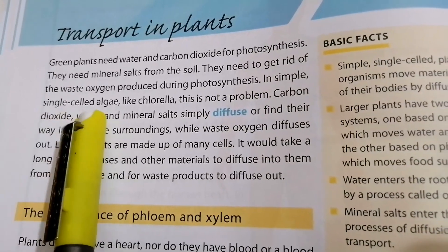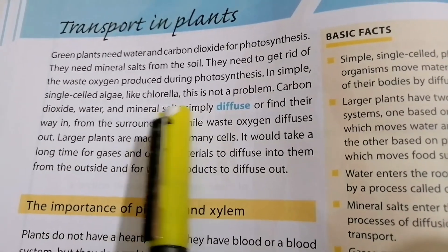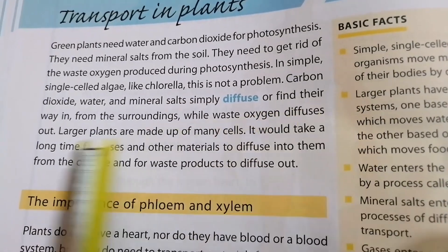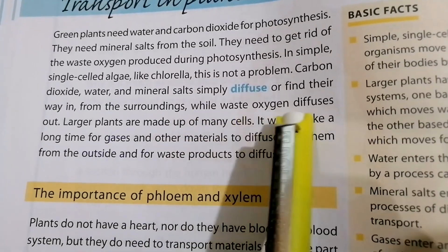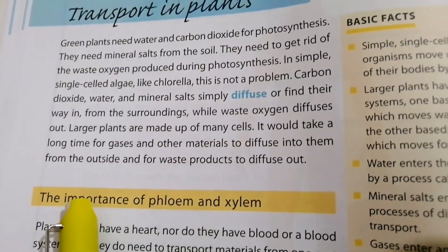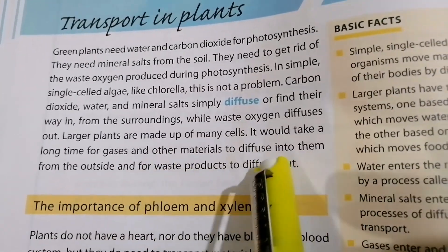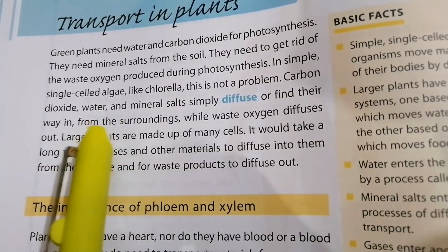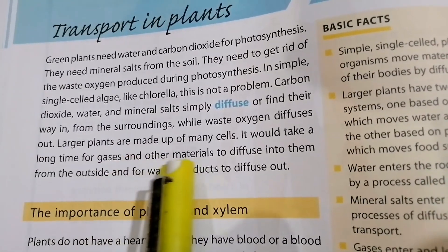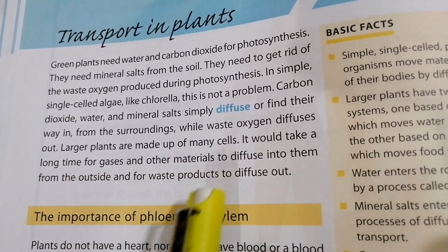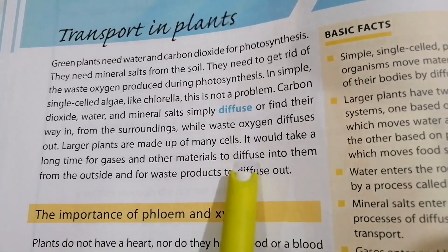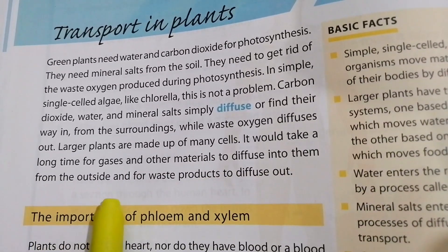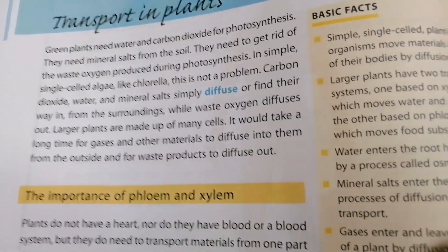In simple single-cell algae like Chlorella, this is not a problem. Carbon dioxide, water, and mineral salts simply diffuse in from the surrounding, while the waste oxygen diffuses out. However, larger plants are made up of many cells, and it would take a long time for gases and other minerals to diffuse into them from the outside, and for waste products to diffuse out.